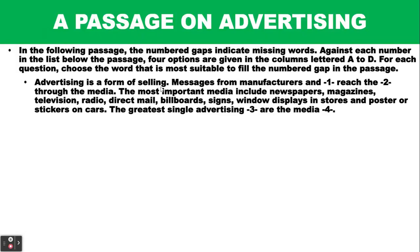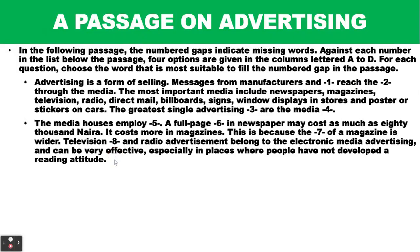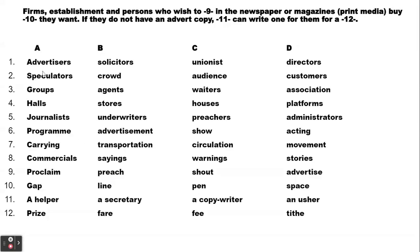Advertising is a form of selling. Messages from manufacturers and [1] reach the [2] through the media. We are looking at number one: manufacturers and advertisers, solicitors, unionists or directors — of course, we are talking of advertisers. And then the message reaches which people? Speculators, crowd, audience or customers — of course, the customers.